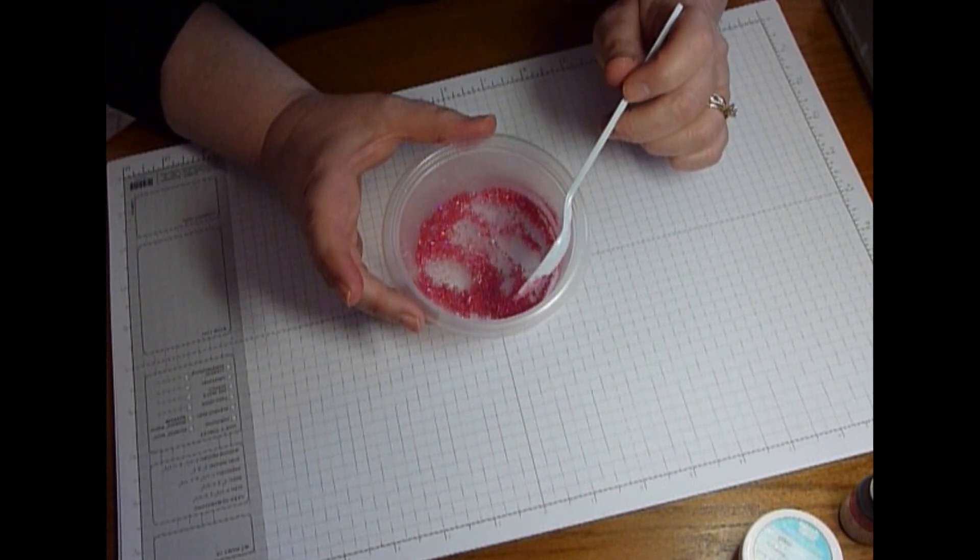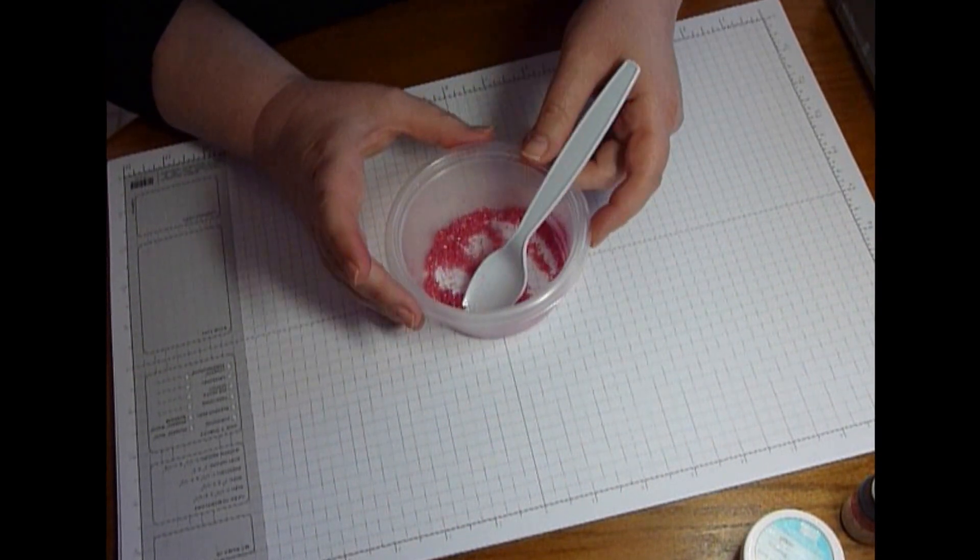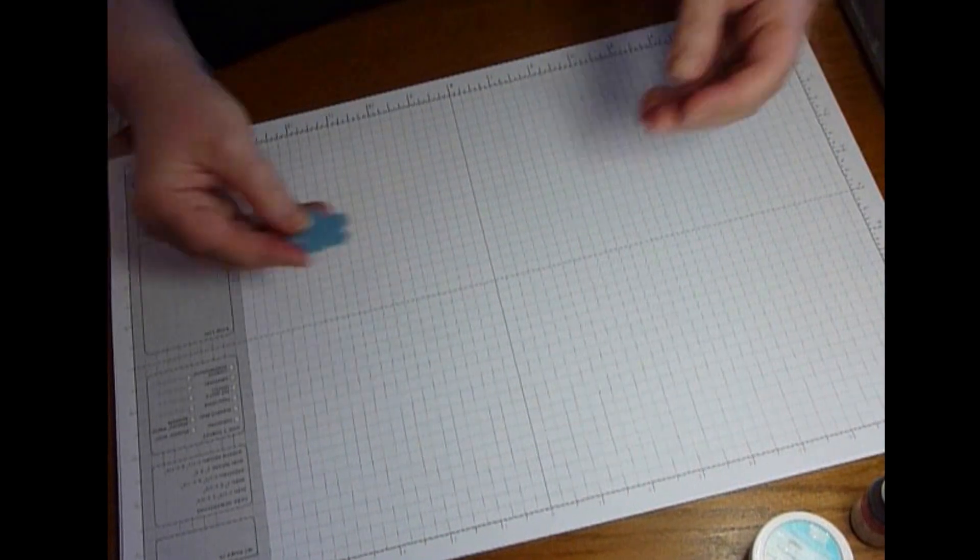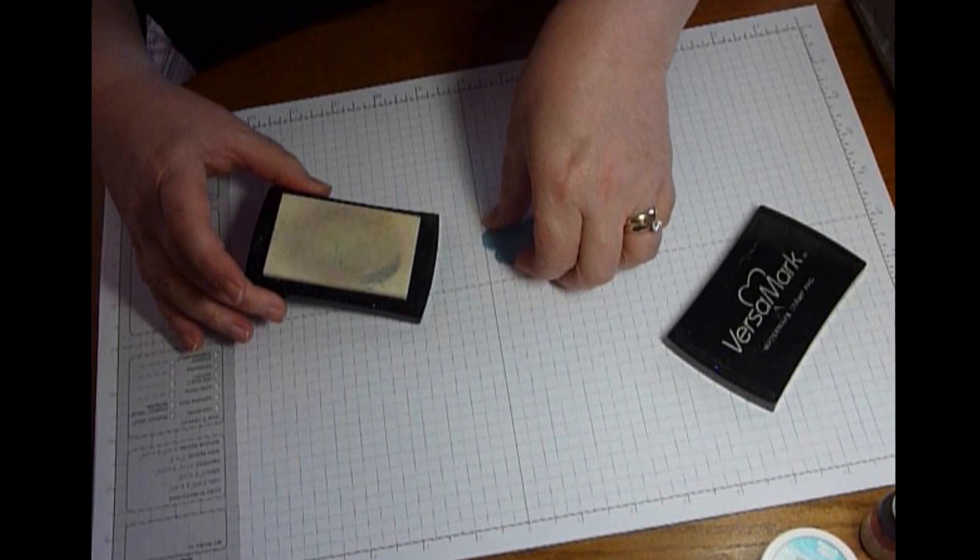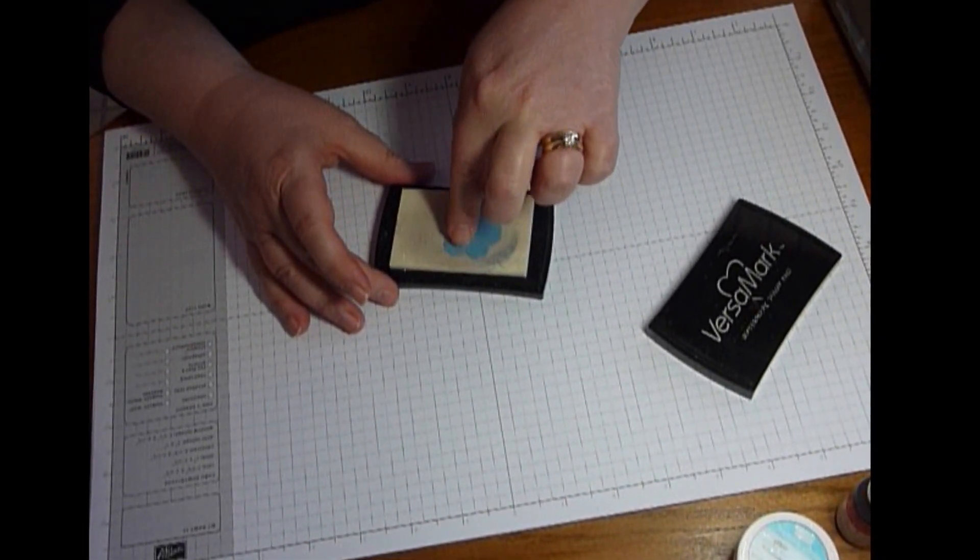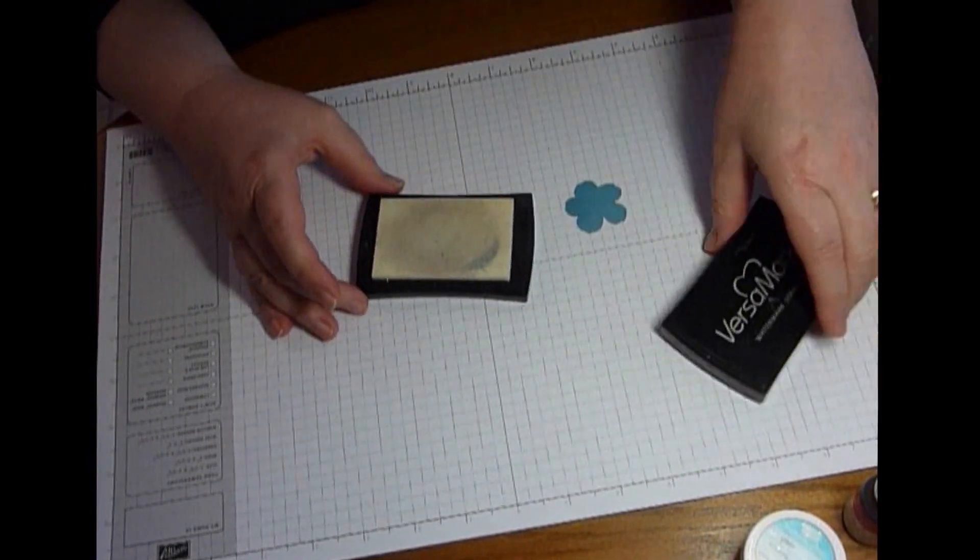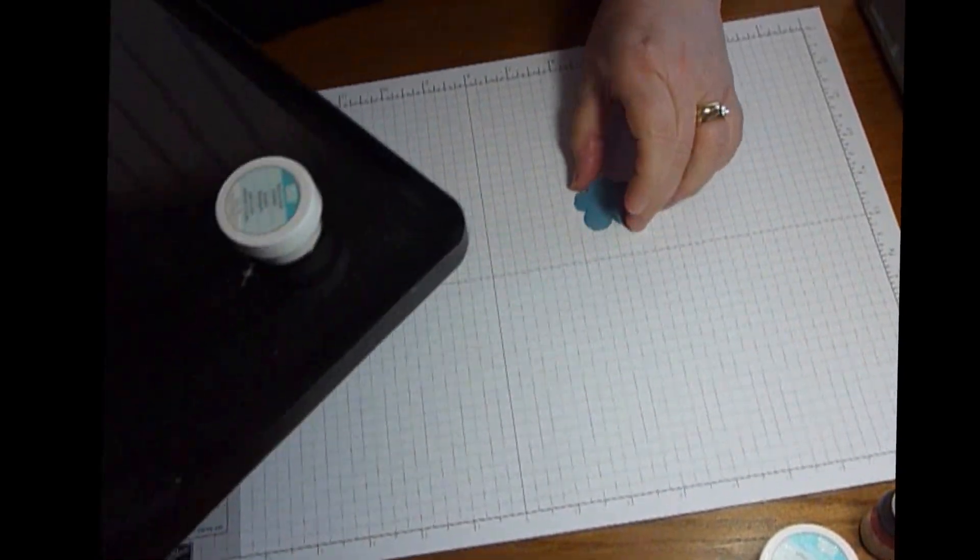Once that's done you can go ahead and use the glitter as you normally would. You need some type of adhesive to adhere it. Let me show you what I did. Here I've got a flower that I cut out with a Secret Garden Framelit. I'm just going to press it into my VersaMark pad so that it's all coated on one side. This is just direct to pad, I've put the cardstock right into the pad.